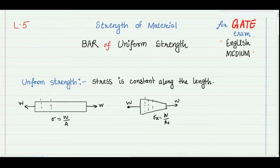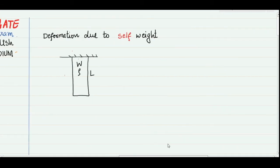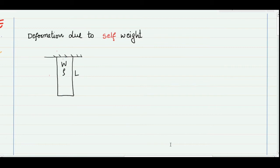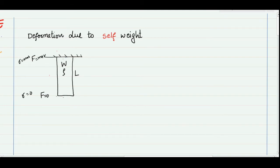Consider a bar suspended vertically with no external force — deformation due to self-weight. Even though the cross-section is constant, the stress is not constant. The force is zero at the free end and maximum at the fixed end, so stress is zero at the free end and maximum at the fixed end. This bar is not a bar of uniform strength; stress varies as we move from the free end to the fixed end.